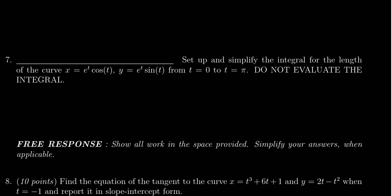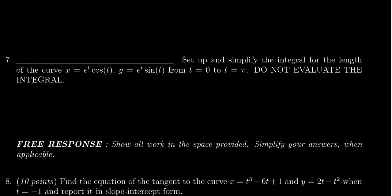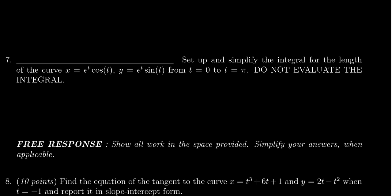In this video, we provide the solution to question number 7 for practice exam number 3 for Math 1220. We have to set up and simplify the integral that will measure the length of the parametric curve: x equals e to the t cosine of t, y equals e to the t sine of t, as t ranges from 0 to pi. We have to set up the integral — we do not have to evaluate it.